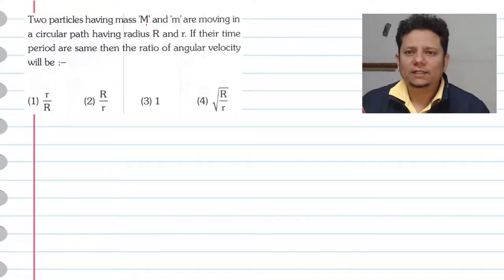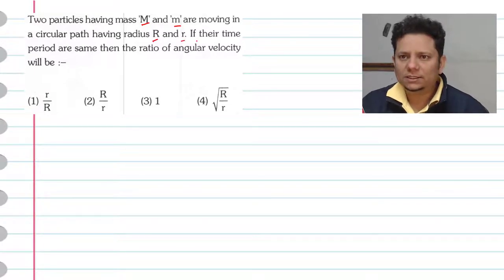Next question. The question says two particles having mass capital M and small m are moving in a circular path having radius capital R and small r.